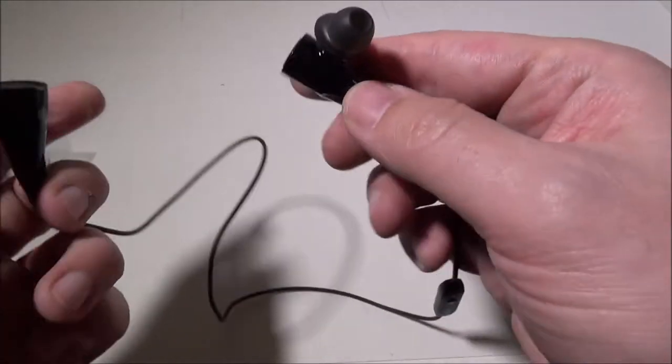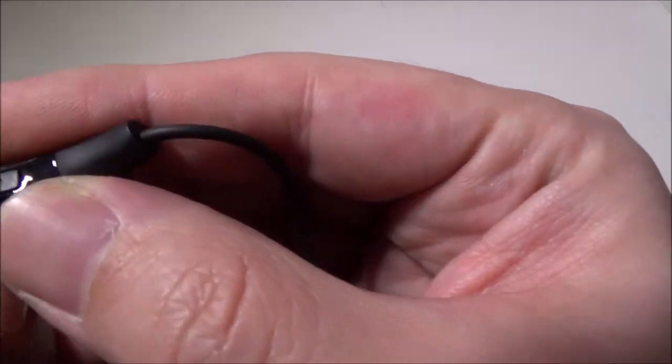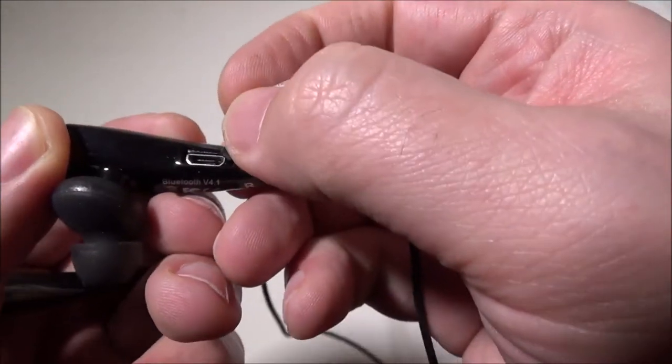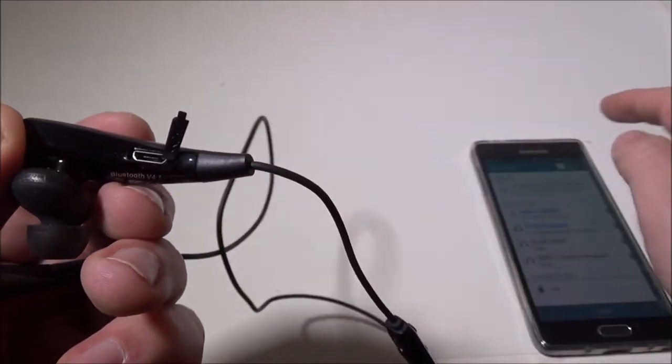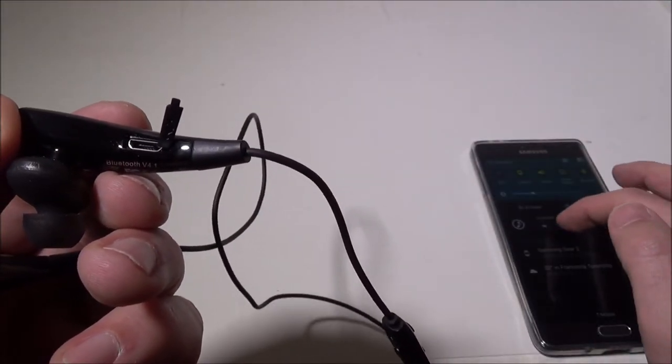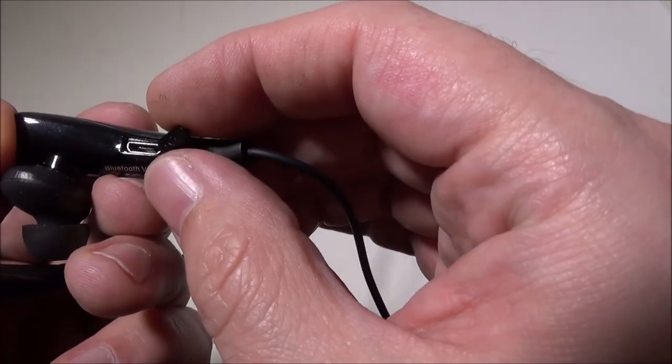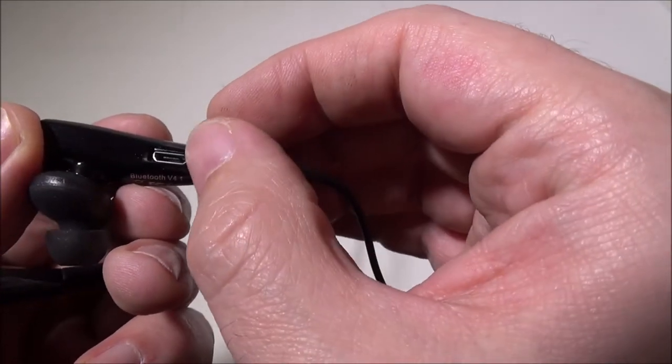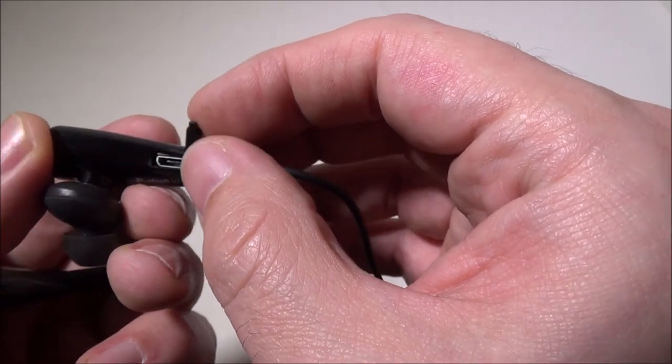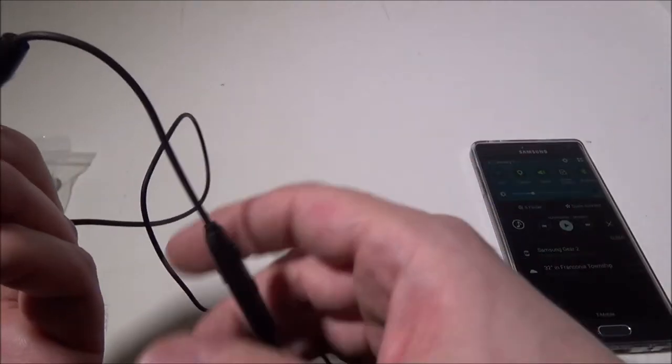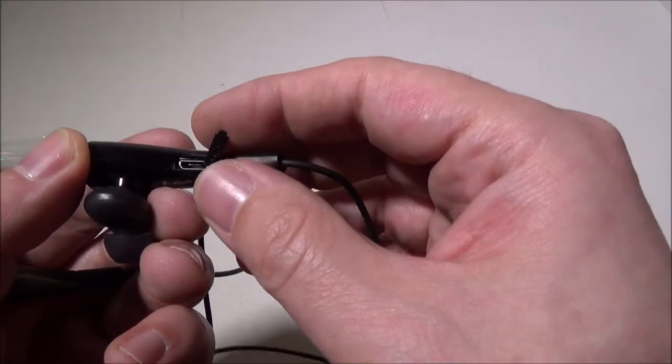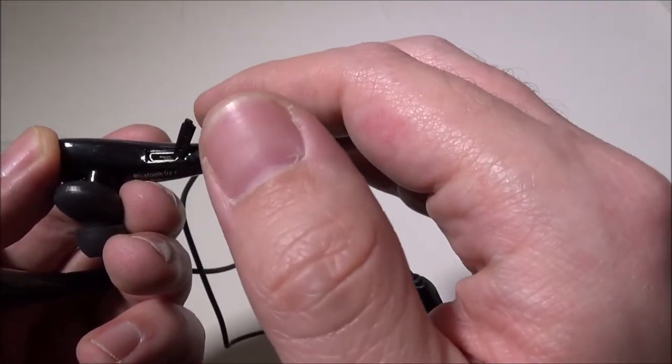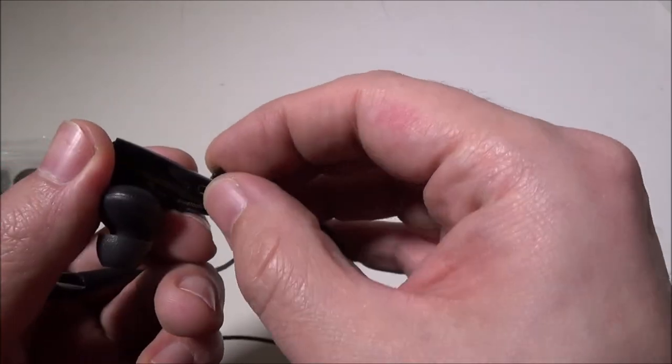Again, you're going to have this little tiny clip here that will release your charge port, which is very easy for you to access, and it does a great job at keeping out moisture. If you're going to use these for workouts, which this would be perfect for running or cycling, and you get a little bit sweaty, you're not going to get any of that moisture inside the charge port.